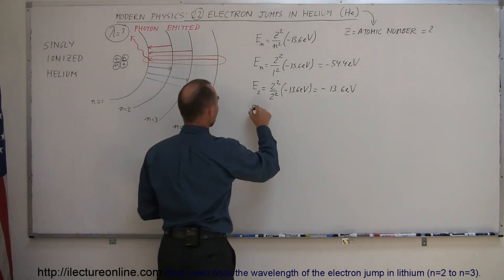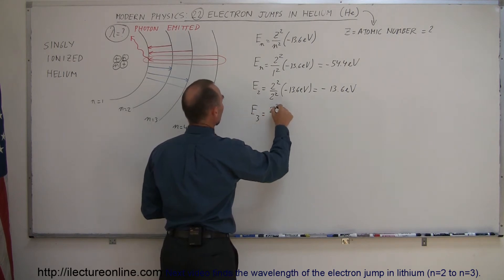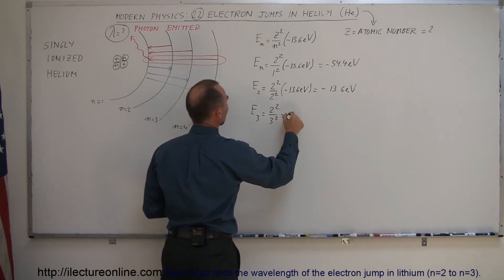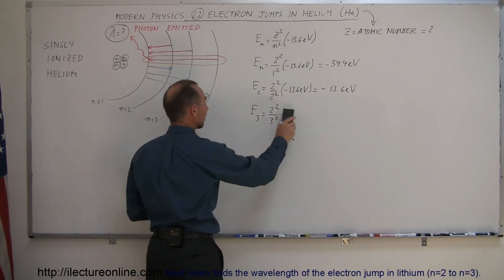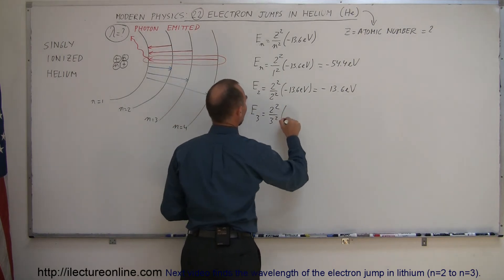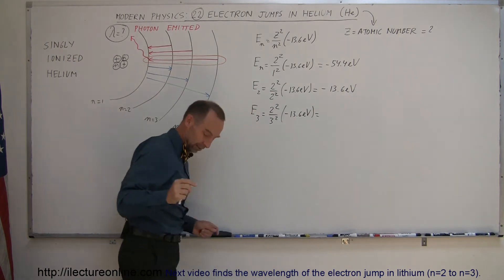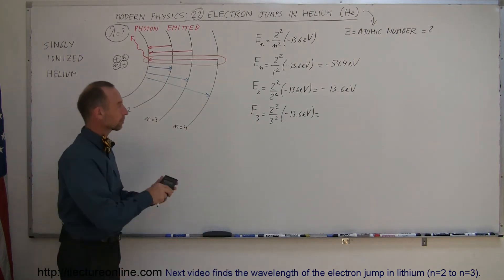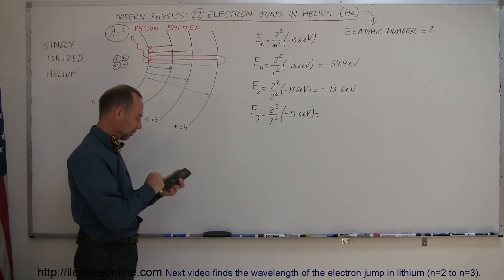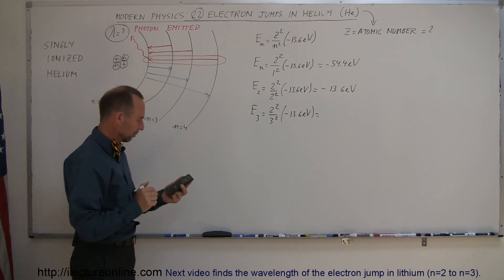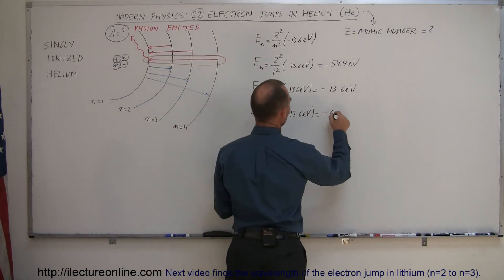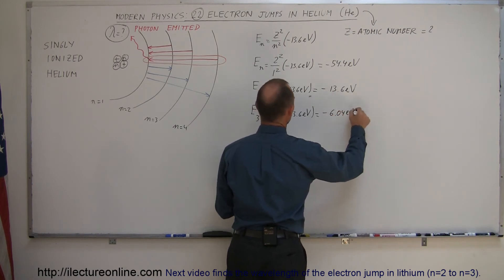Finding the third level energy, so E-sub-3 is equal to 2-squared divided by 3-squared times minus 13.6 electron volts. And for that, we're going to need our calculator. So we take 54.4 divided by 9 equals, and that would be minus 6.04 electron volts.